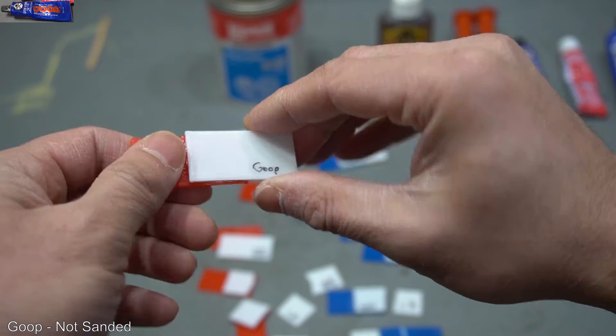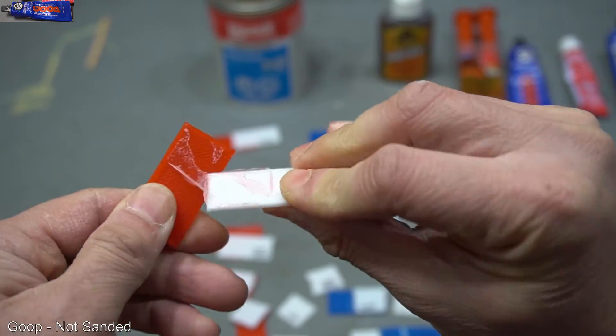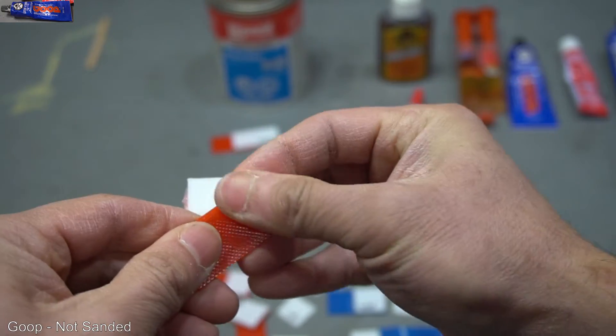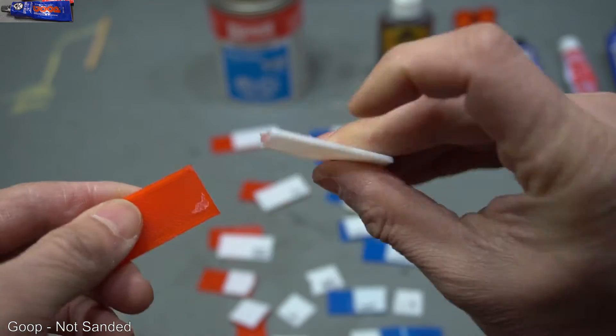Unsanded goop. That broke really easy. The glue just peels right off.